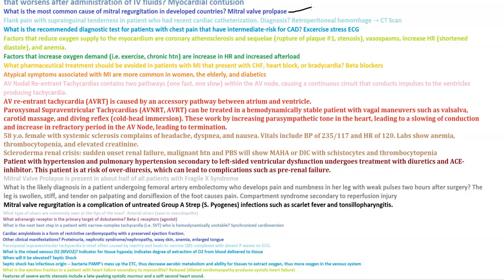Flank pain with suprainguinal tenderness in patients who have had recent cardiac catheterization — the diagnosis is retroperitoneal hemorrhage, seen on CT scan. The recommended diagnostic test for patients with chest pain at intermediate risk for CAD is an exercise stress test.